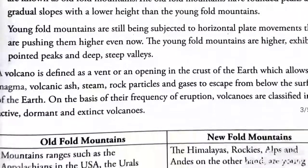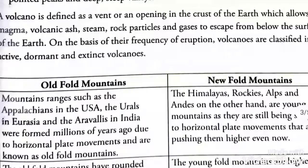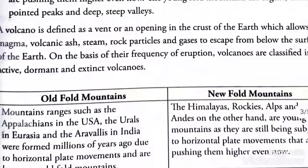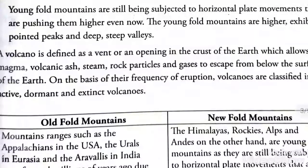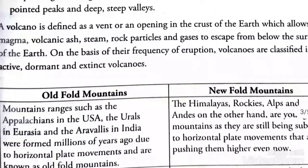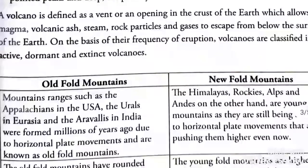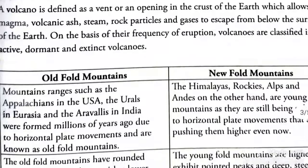Question 4: what is a volcano? A volcano is defined as a vent or opening in the crust of the earth which allows hot magma, volcanic ash, rock particles and gases to escape from below to the earth's surface. On the basis of their frequency of eruption, volcanoes are classified into active, dormant and extinct volcanoes.